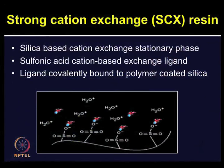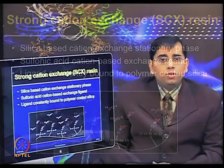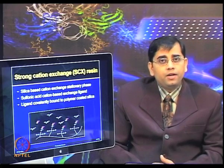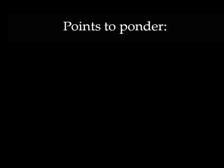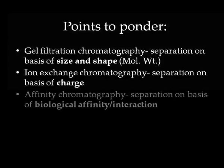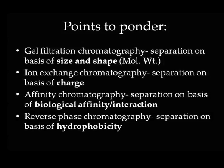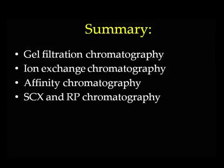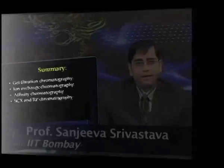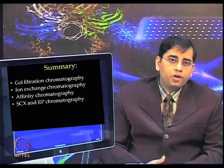Strong cation exchange (SCX) chromatography consists of a stationary phase matrix made up of negatively charged sulfonic acid groups, which bind oppositely charged peptide molecules. These molecules can be eluted using a positively charged mobile phase that binds the analyte molecules more firmly. In summary, we have discussed the principles of different chromatography methods commonly employed for proteins and peptides, and looked at some of these methods in more detail.